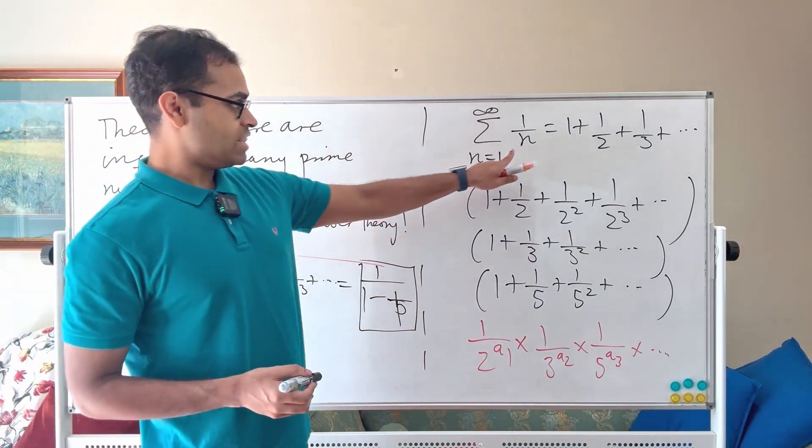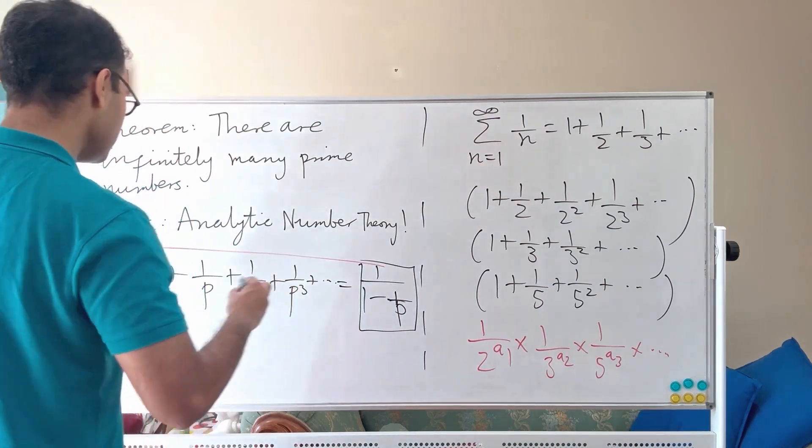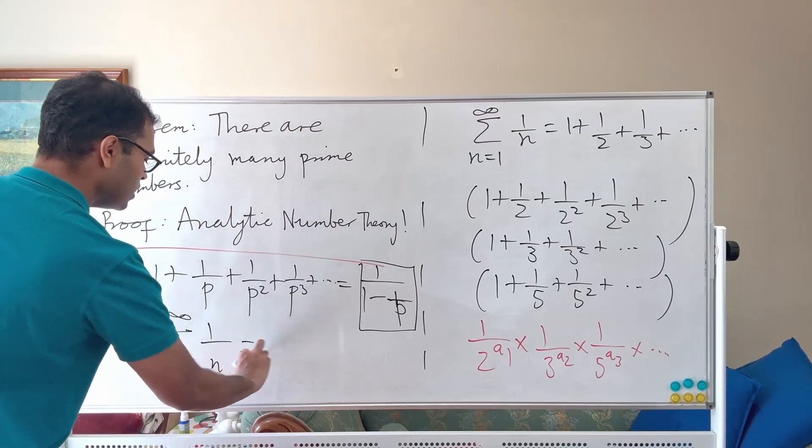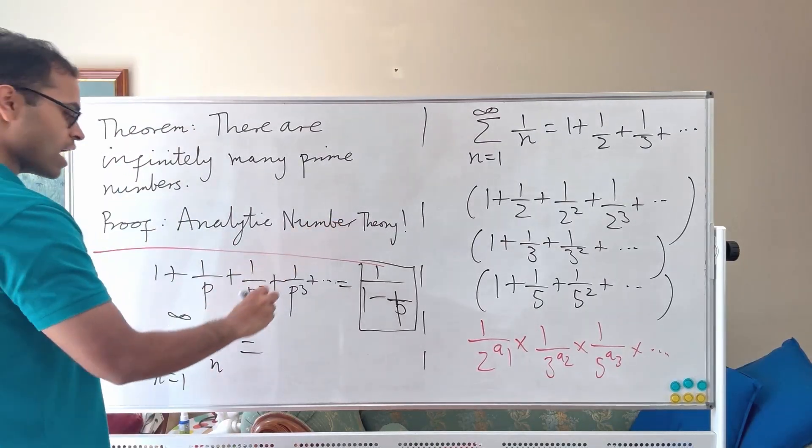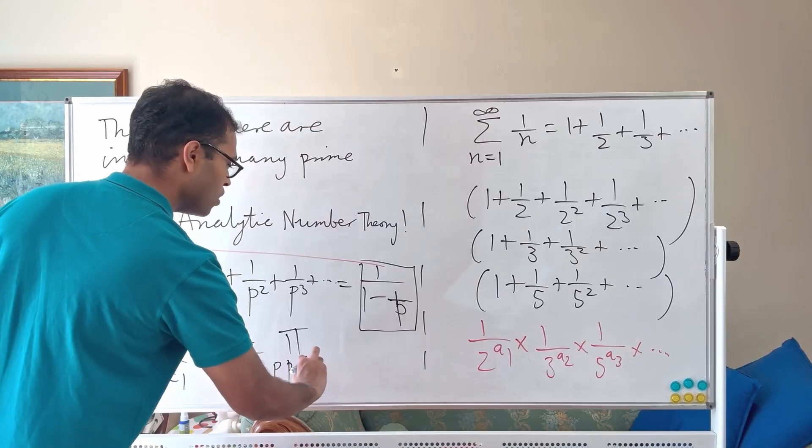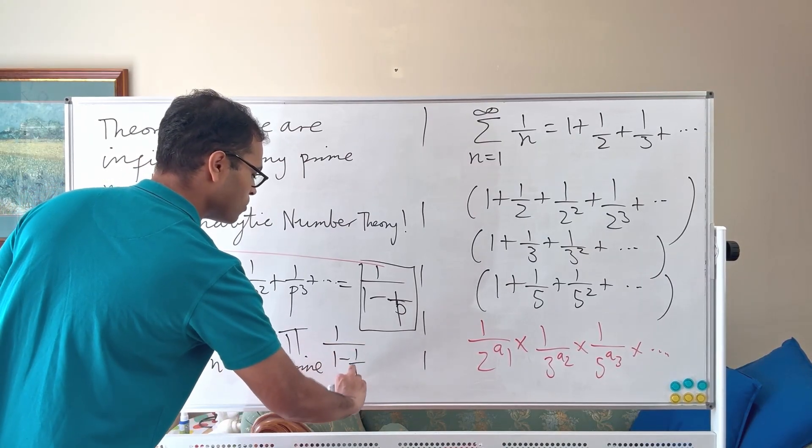So what that means is that this series sum N equals 1 to infinity of 1 over N is going to equal to the product for P prime over all prime numbers of 1 over 1 minus 1 over P.